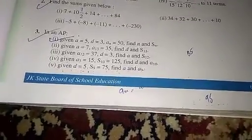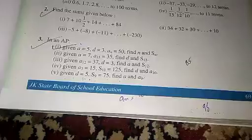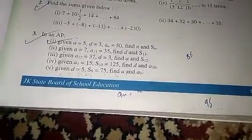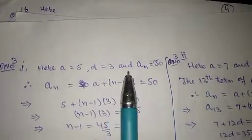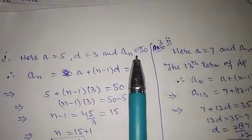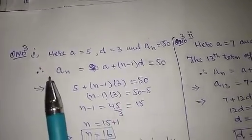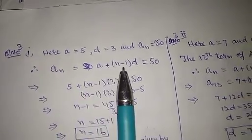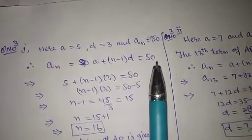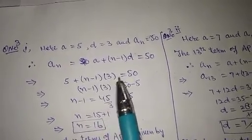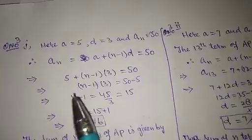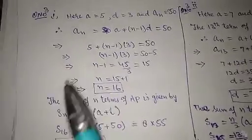Now we will solve Question 3. Here a = 5, d = 3, and an = 50. It is given that an = a + (n−1)d = 50. That is, 5 + (n−1) × 3 = 50. Simplifying this, we get n is equal to 16.